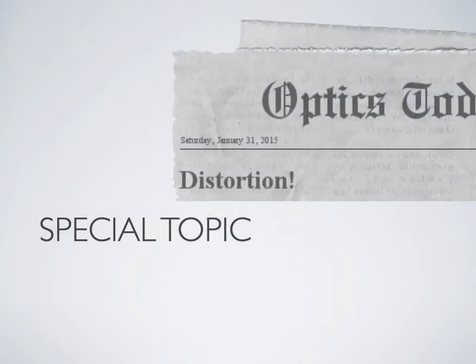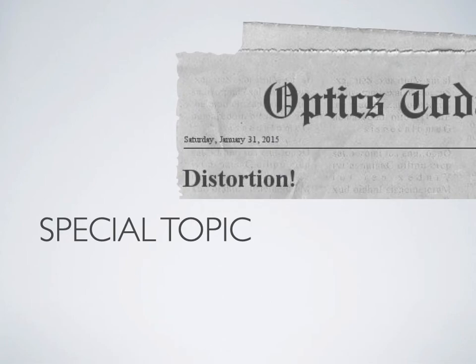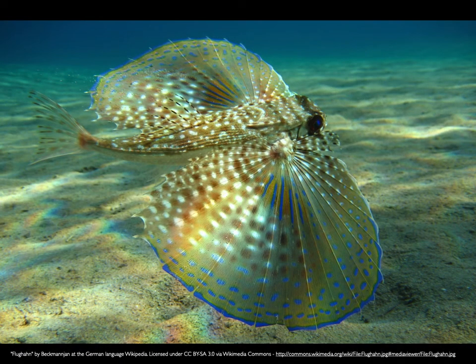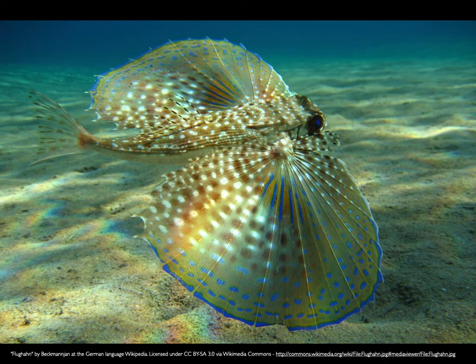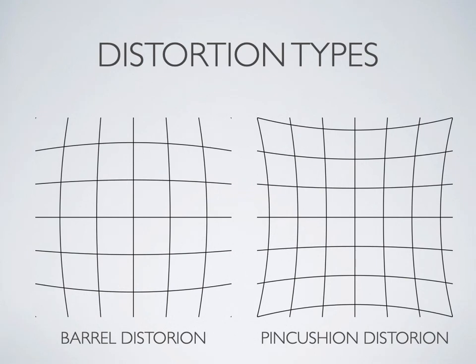Let's talk about distortion. We're going to be looking at an image of a fish — a ray-fin fish — and we'll have the easiest time identifying the type of distortion by looking at the edge or horizon of the picture, which in this case is nice and flat. The distortions we're going to describe are barrel and pin cushion.